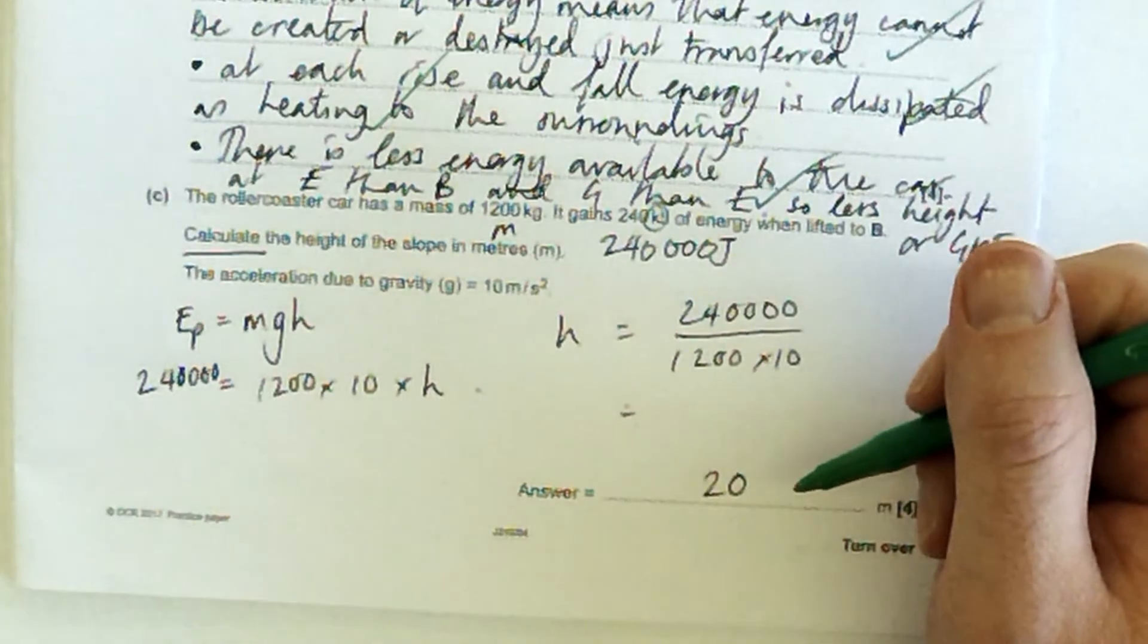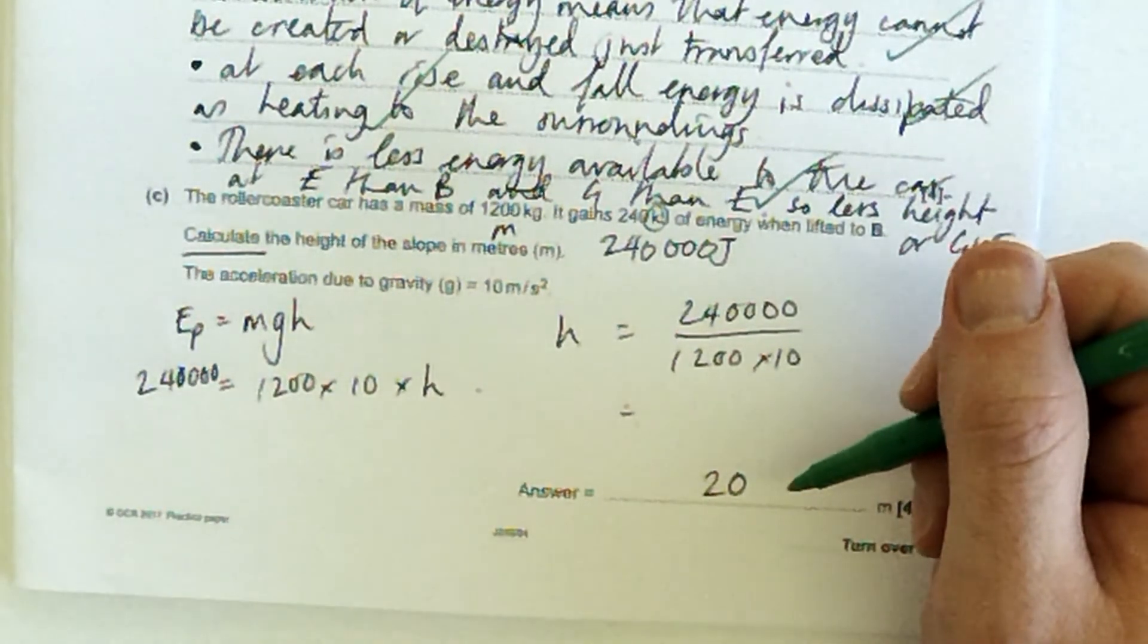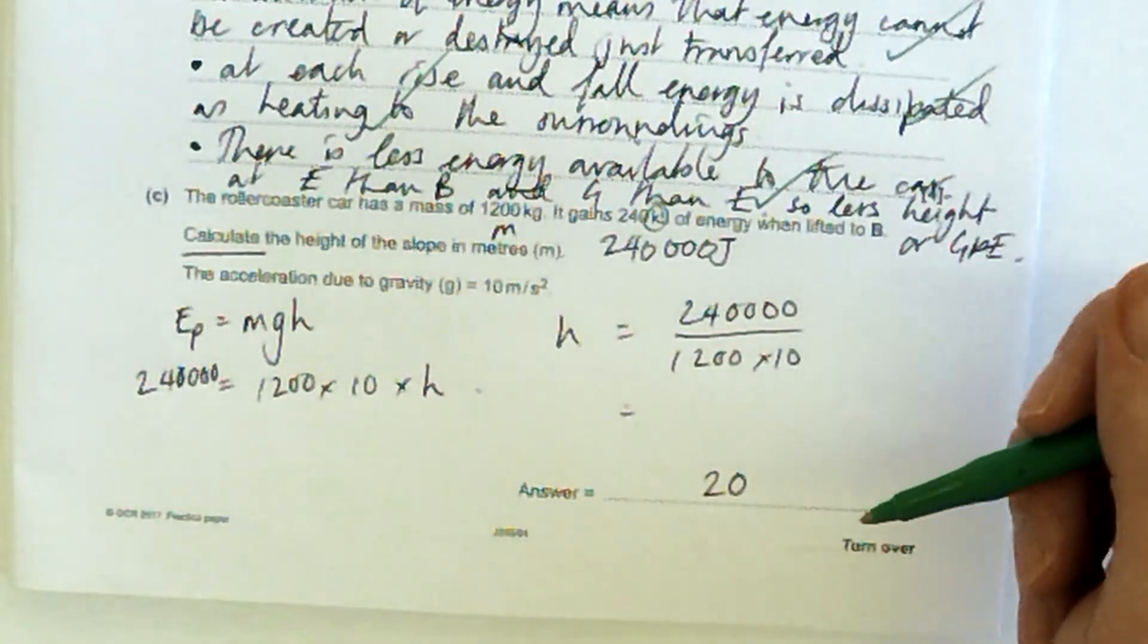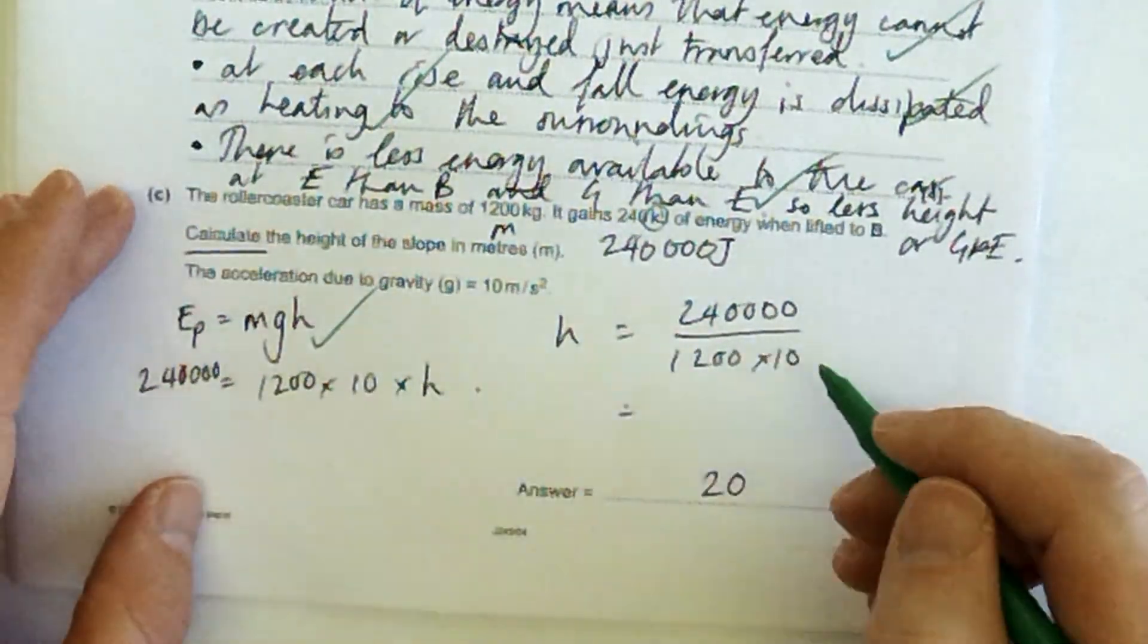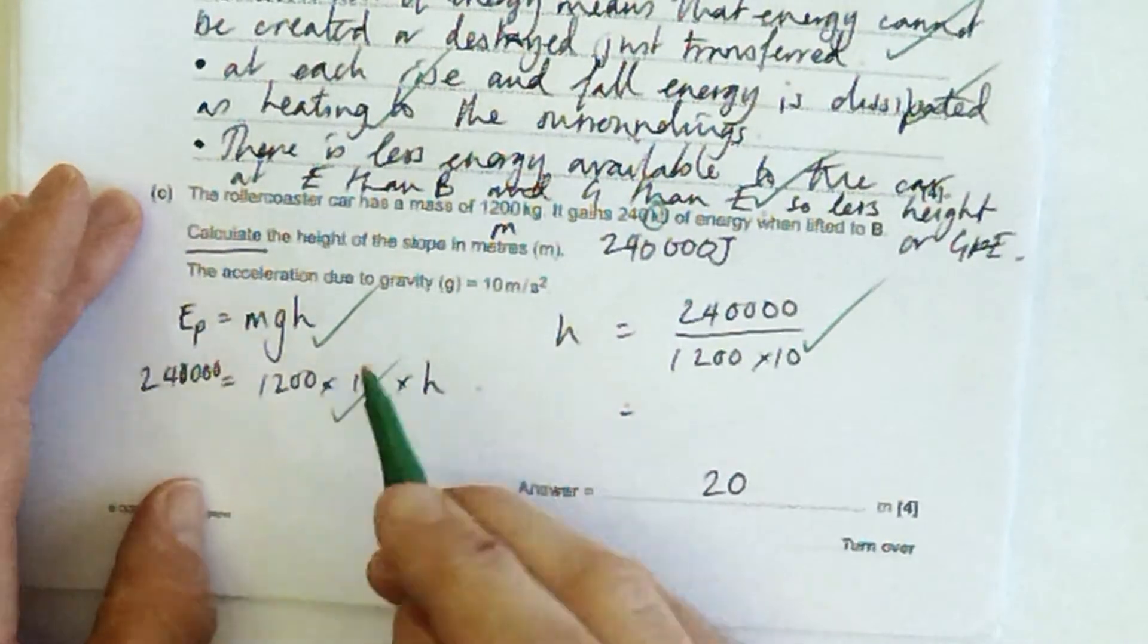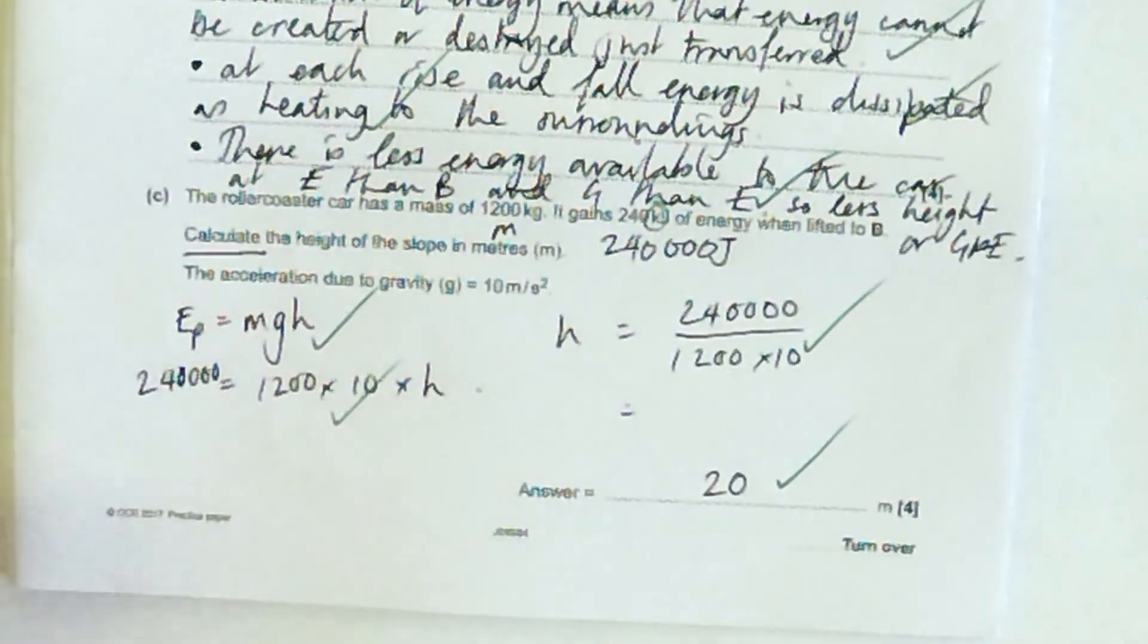I will say about this question that a lot of people were missing out that kilo. And they end up with something like 0.02 meters, which is like 2 centimeters. So if you just put in 240, you get 0.02 meters. That is not going to be a very high or very exciting roller coaster. So do you think about this, is that a sensible answer for me to have given to this question?